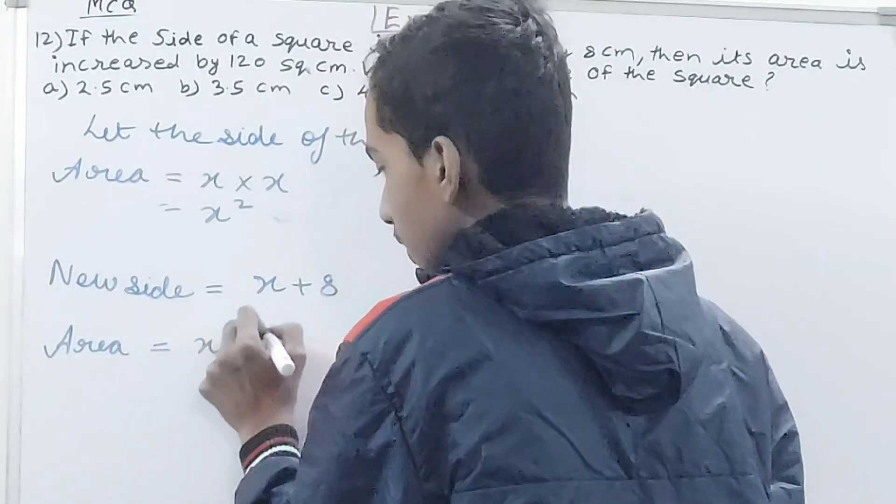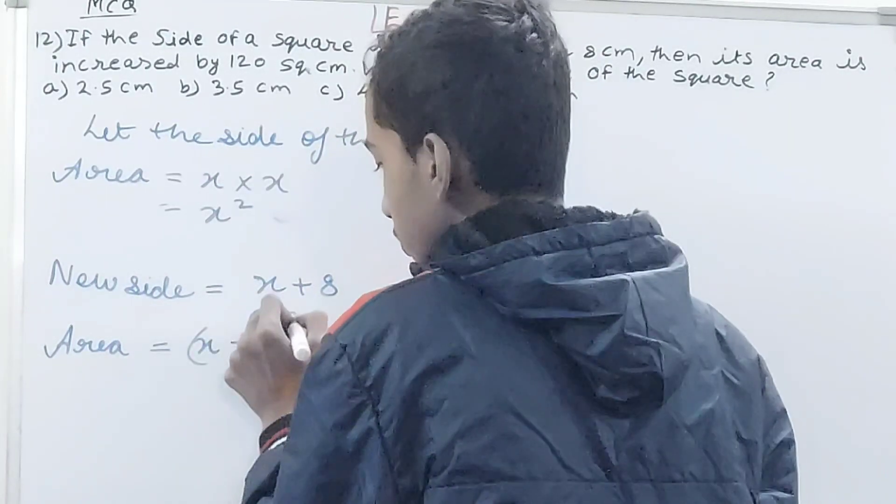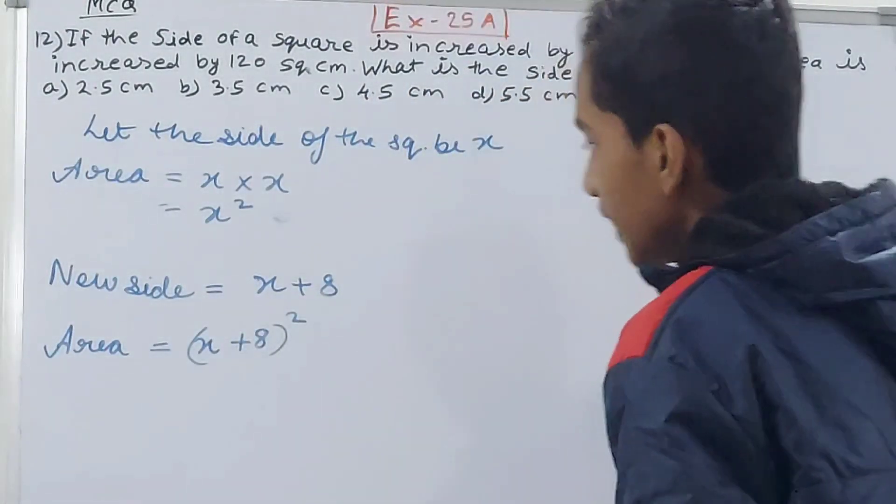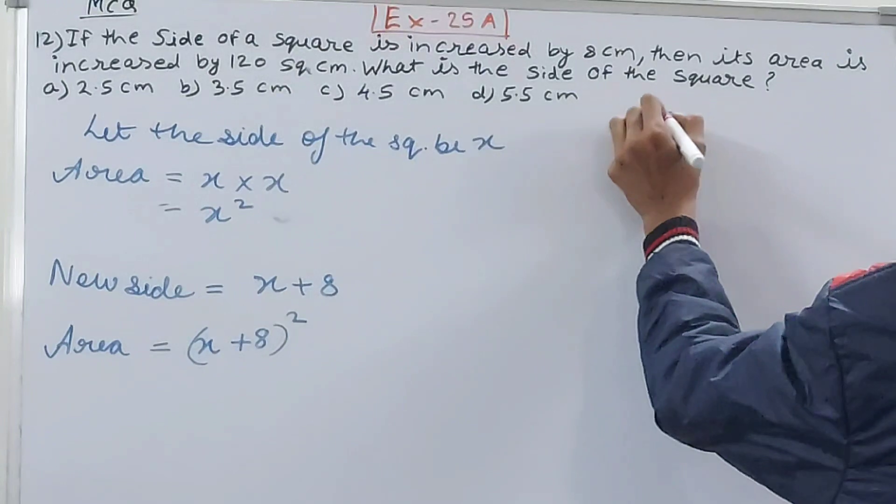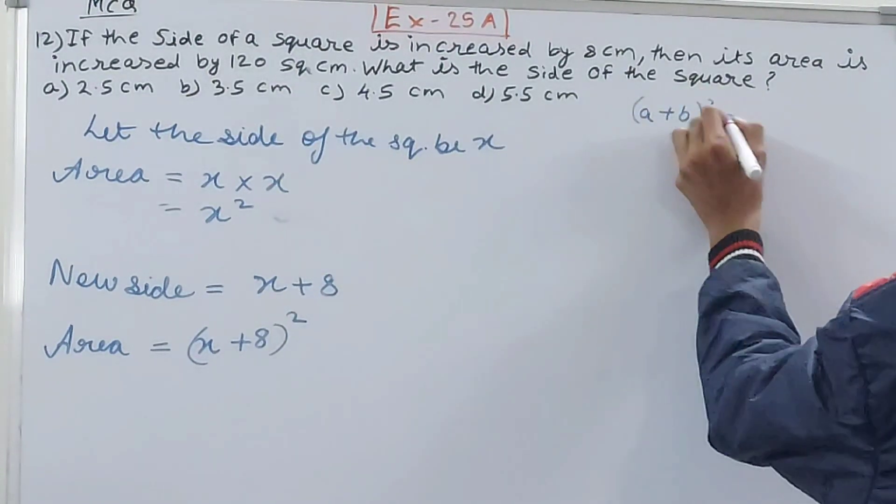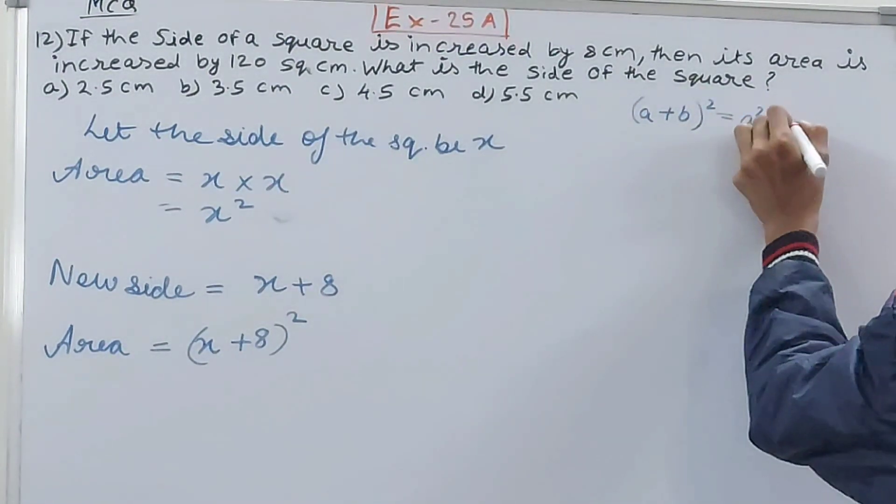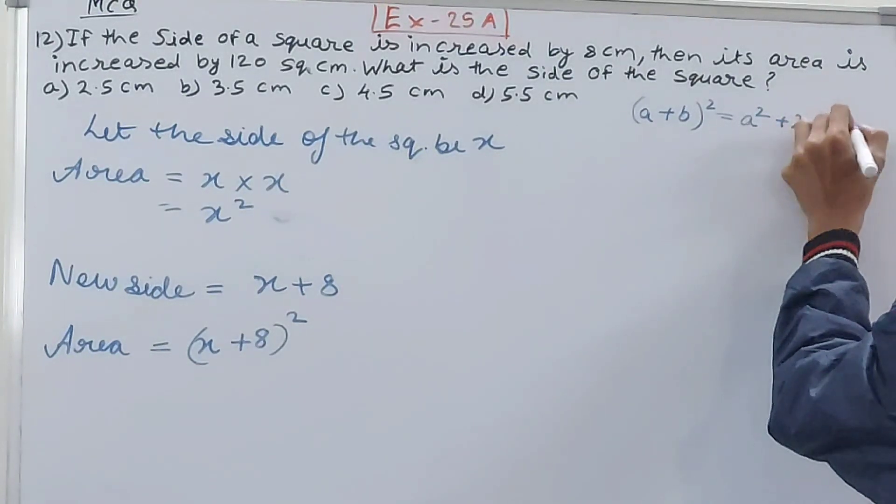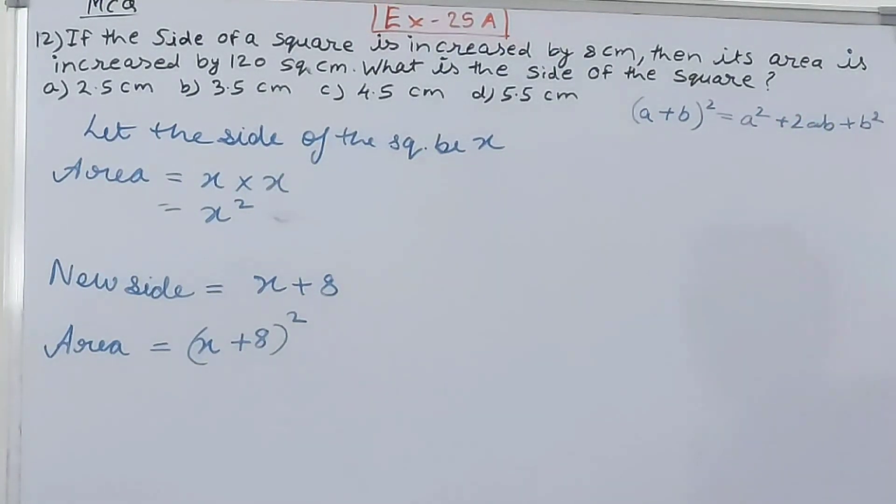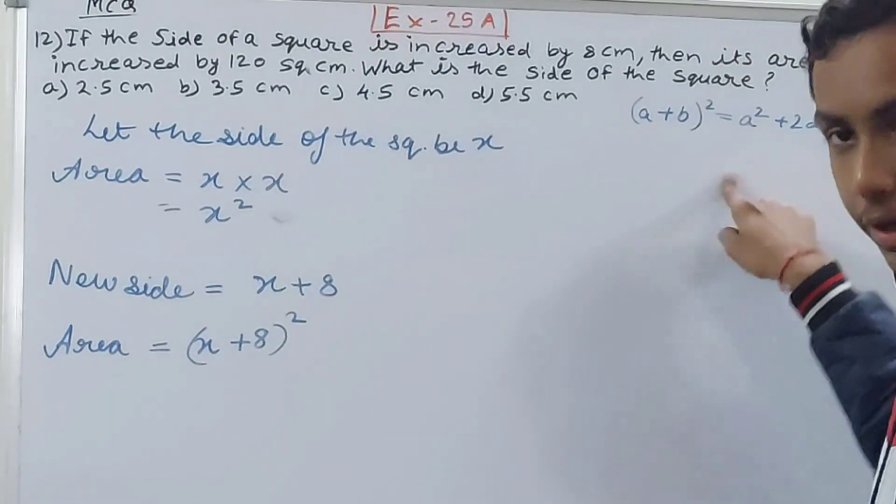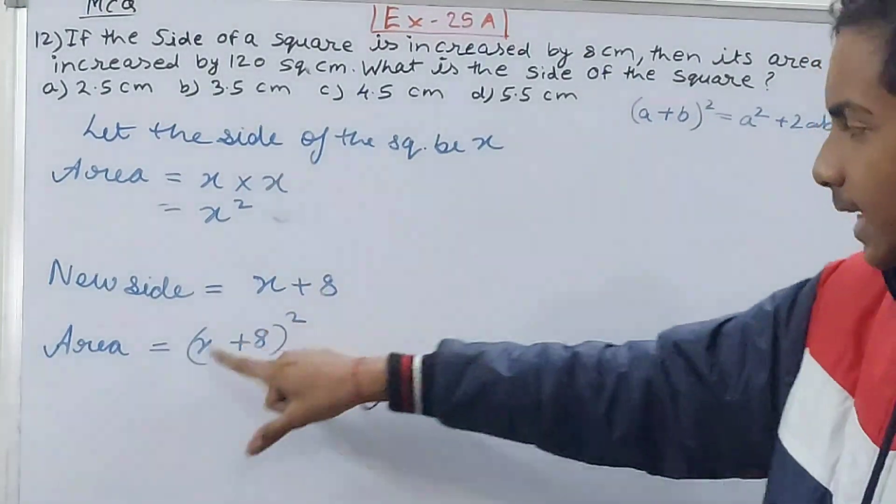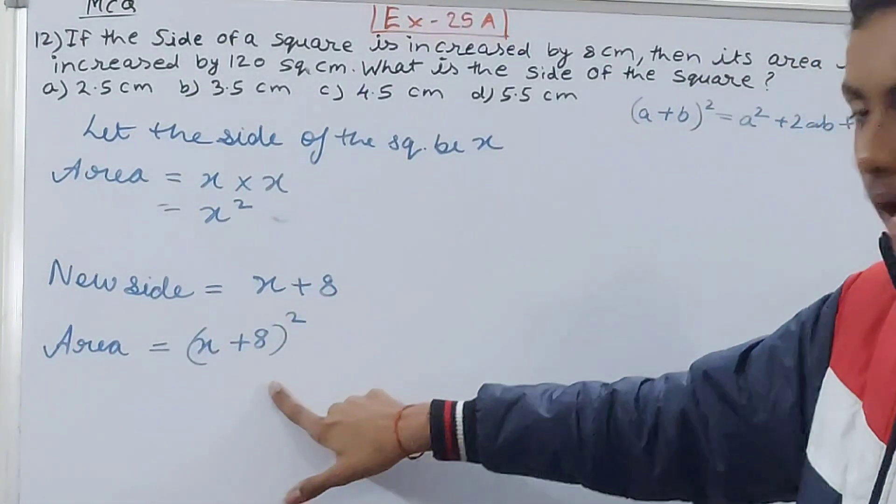So we have studied this identity, a plus b whole square is equal to a squared plus 2ab plus b squared. This is how we open such kind of statements. Here a is x and b is 8.